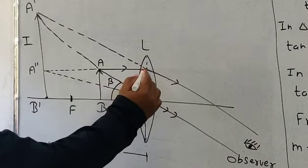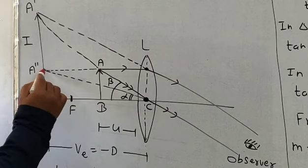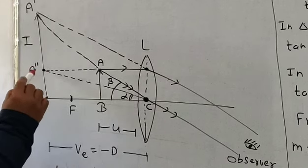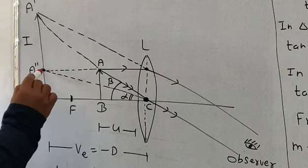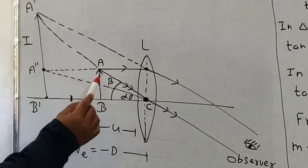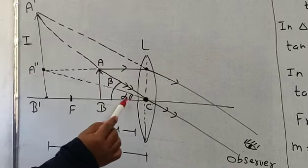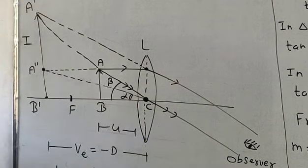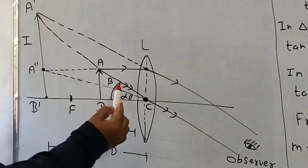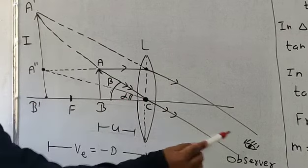AB is the object, and A'B' represents the height of the image. A'B' is equivalent to AB in terms of the height of the object. AB forms an angle alpha with respect to the observer, and the final image forms an angle beta with respect to the observer.